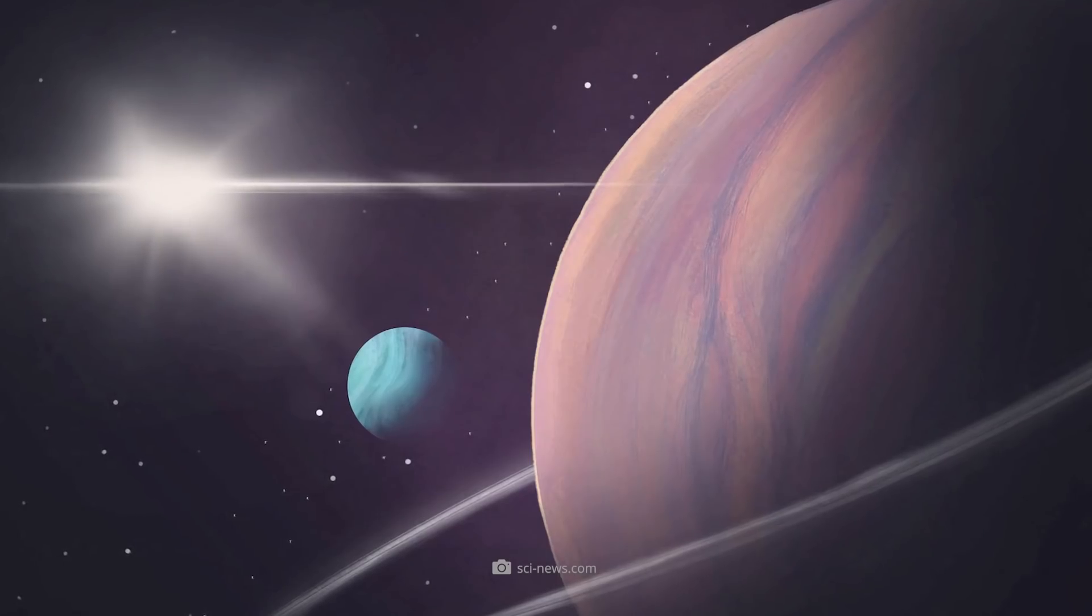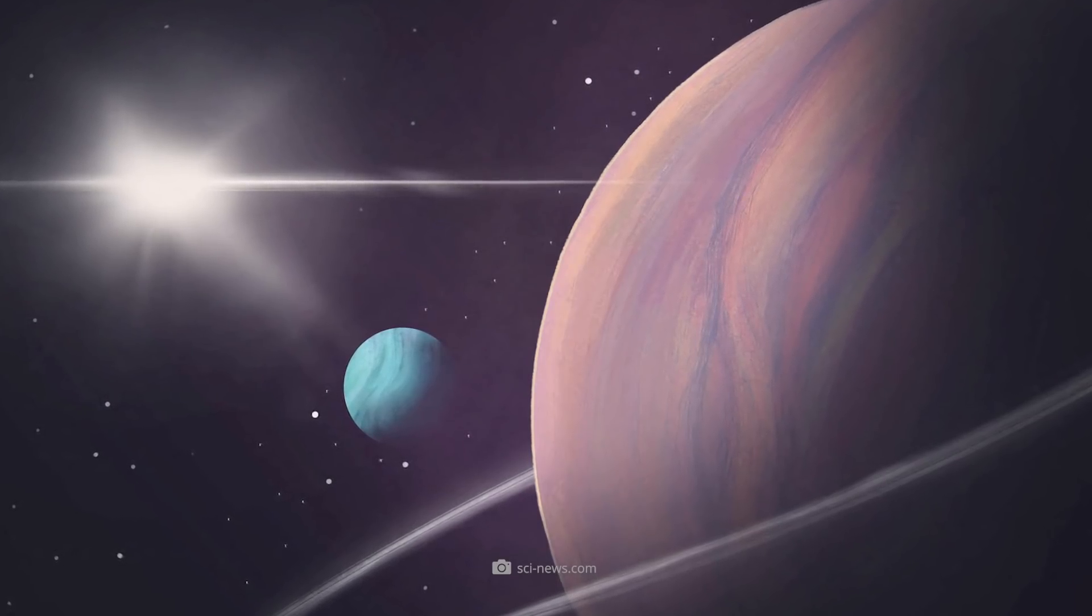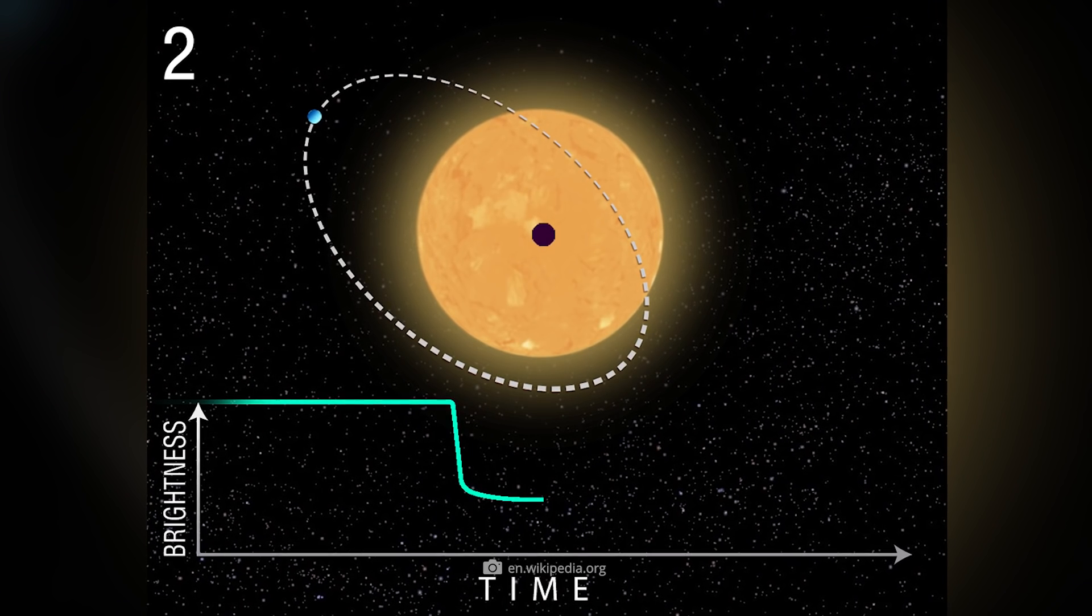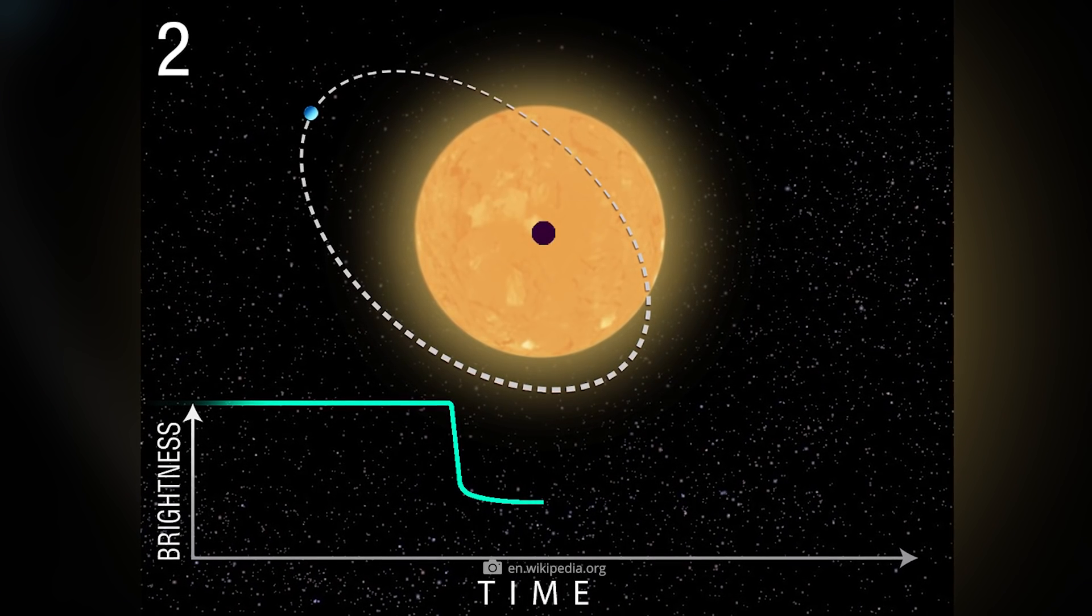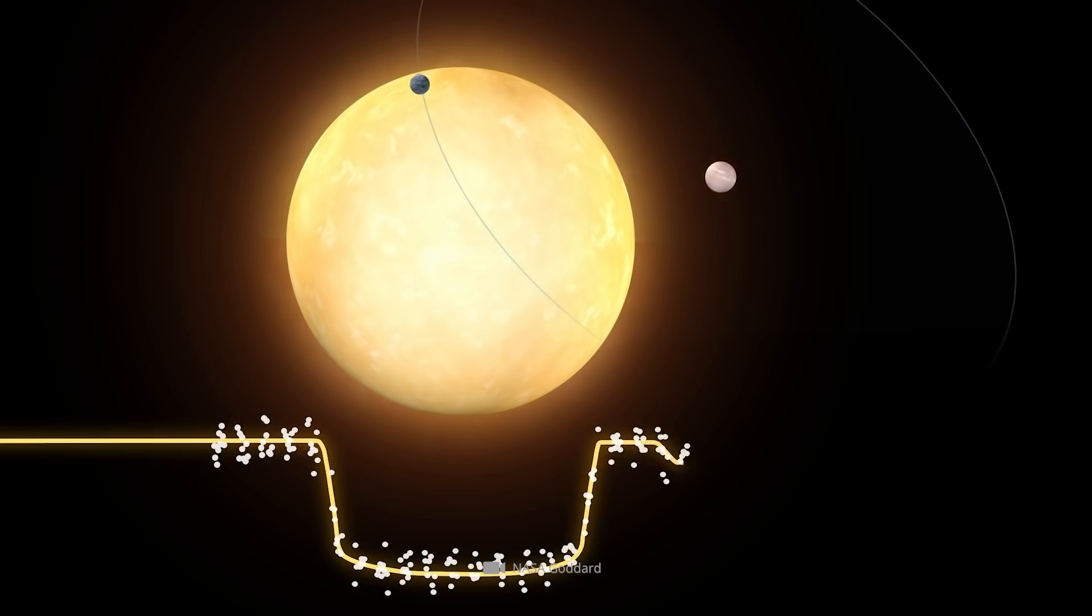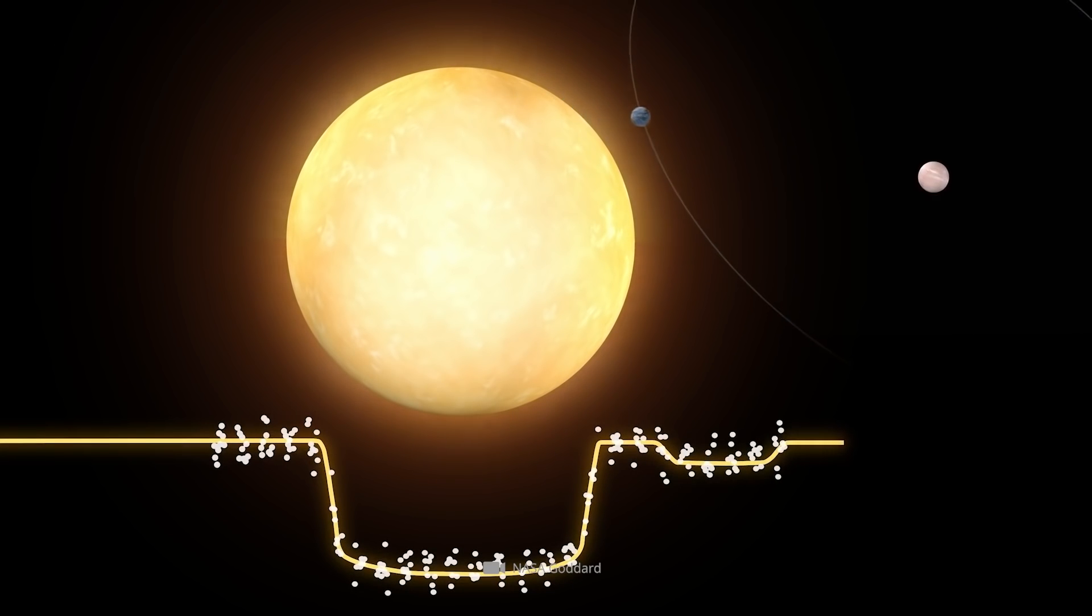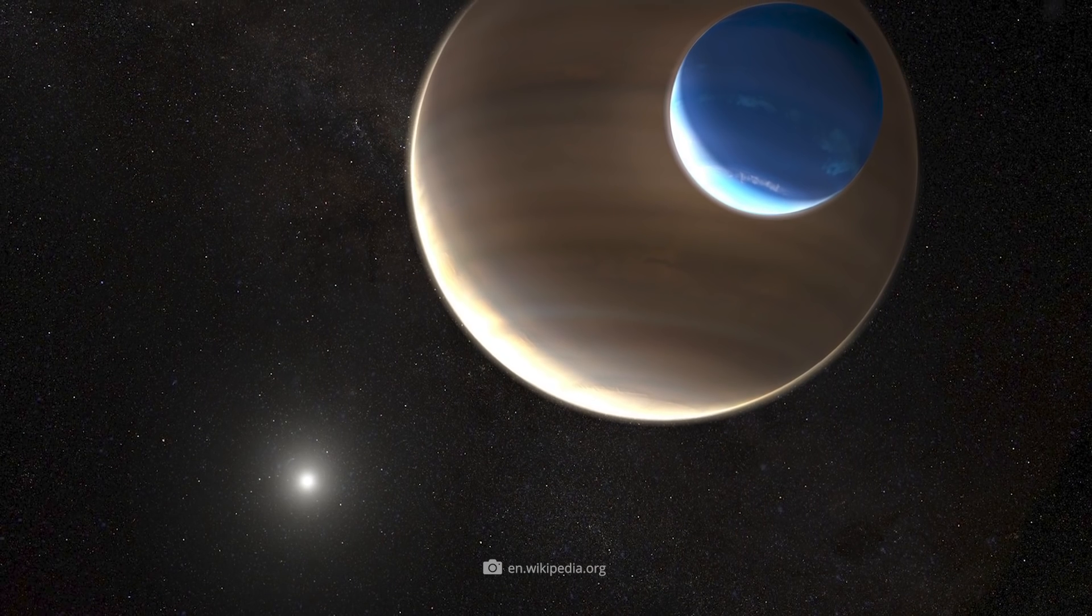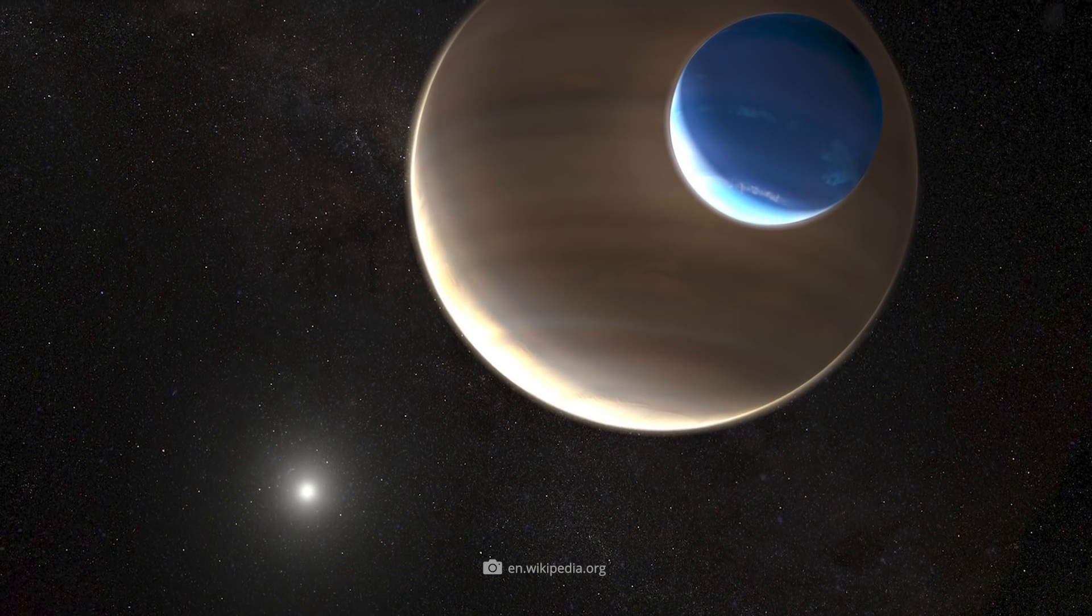The gratifying finding was that the anomalies in the light curve of Kepler 1625b were confirmed again, about 3.5 hours after the gas giant had triggered a temporary dimming of its parent star. A second, much fainter dimming of the central star followed, a circumstance that undoubtedly fits a planet accompanied by a smaller moon.